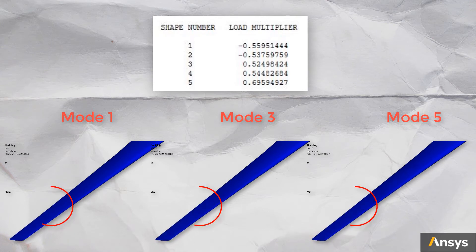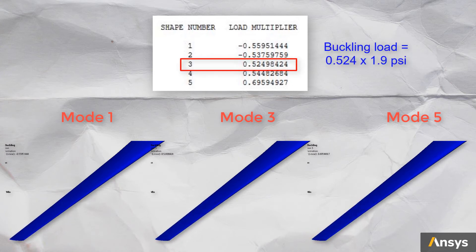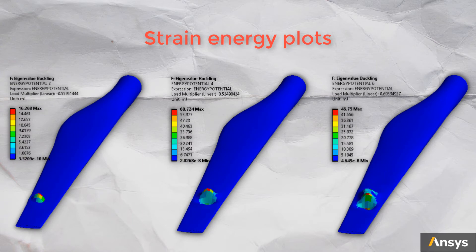We will obtain the load multipliers and their corresponding mode shapes from the eigenvalue analysis. We can see that all the modes are indicating buckling through the thickness of the blade. This analysis predicts that the lowest load at which the structure buckles is in mode 3 at a load of 0.524 times the nominal load. We can also plot the strain energy density plots from this analysis and see that the energy is accumulated along the thickness regions, indicating that the blade is weakest along its thickness direction and can use some stiffeners to improve the resistance to buckling.